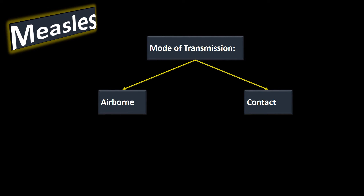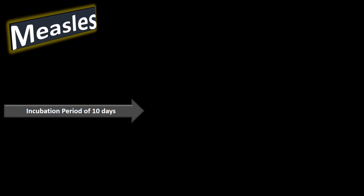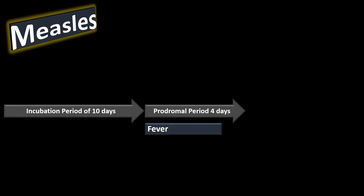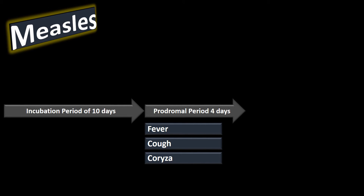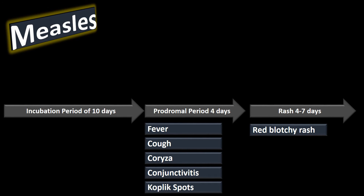Measles has a 10-day incubation period — after contracting the virus, symptoms typically don't appear for about 10 days. From there you enter the prodromal phase, characterized by a prodromal fever lasting about four days, followed by the three C's: cough, corizoa, and conjunctivitis, plus Koplik spots. Then we move into the rash phase, which lasts four to seven days, where that red blotchy rash starts at the face, moves to the thorax, and then to the extremities.